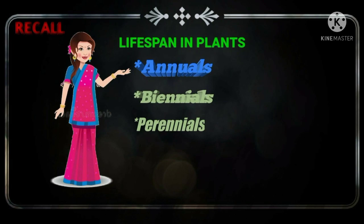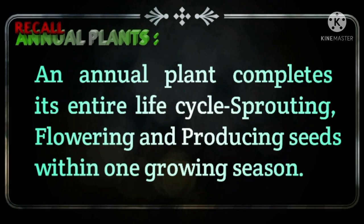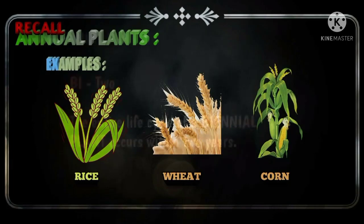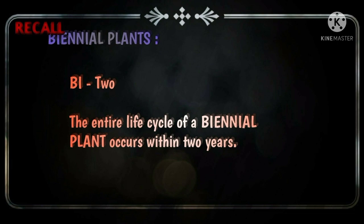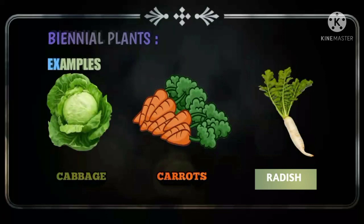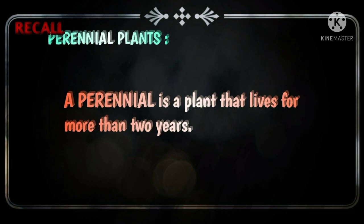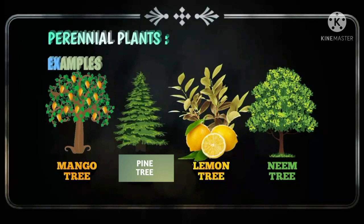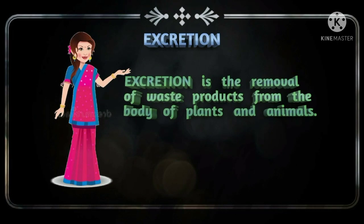Plants that complete their entire life cycle within one growing season are called annuals. For examples, wheat, rice, corn, etc. The plants which live for two years are called biennial plants. For examples, neem tree, mango tree, etc. Next, excretion is the removal of waste products from the body of plants and animals.